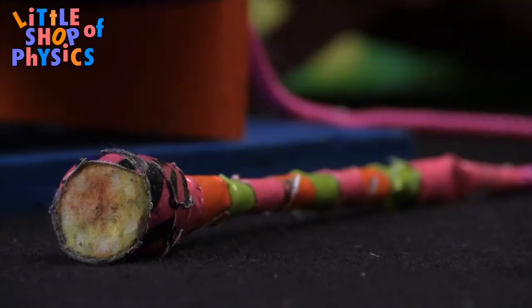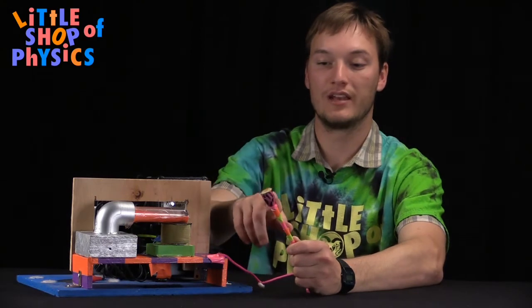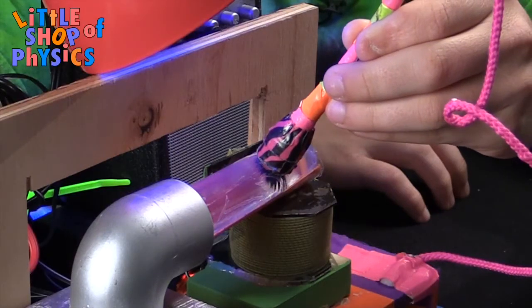The ferro fluid is a solution of iron filings and oil. We also have our magic wand which is a magnet attached to the end of a stick that allows us to move the ferro fluid manually.